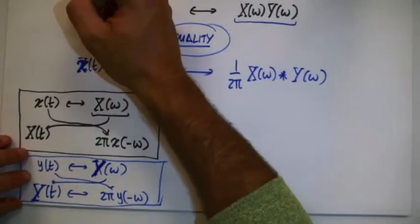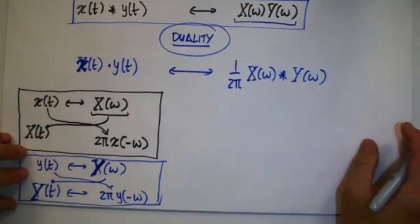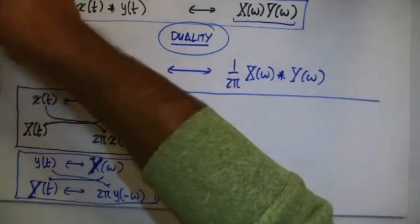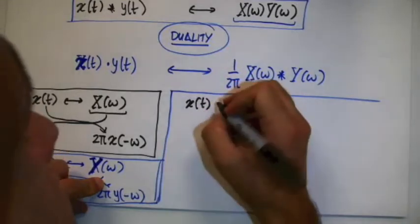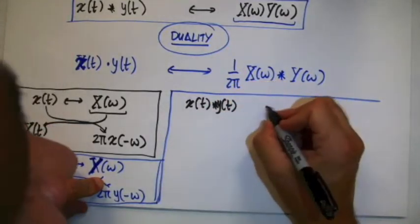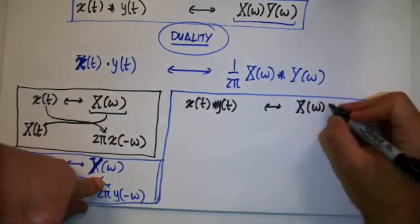Let's apply the duality property to this convolution. So let me do it here. Here we have x of t convolved with y of t, and we know that the correspondent Fourier transform is x of omega, y of omega.